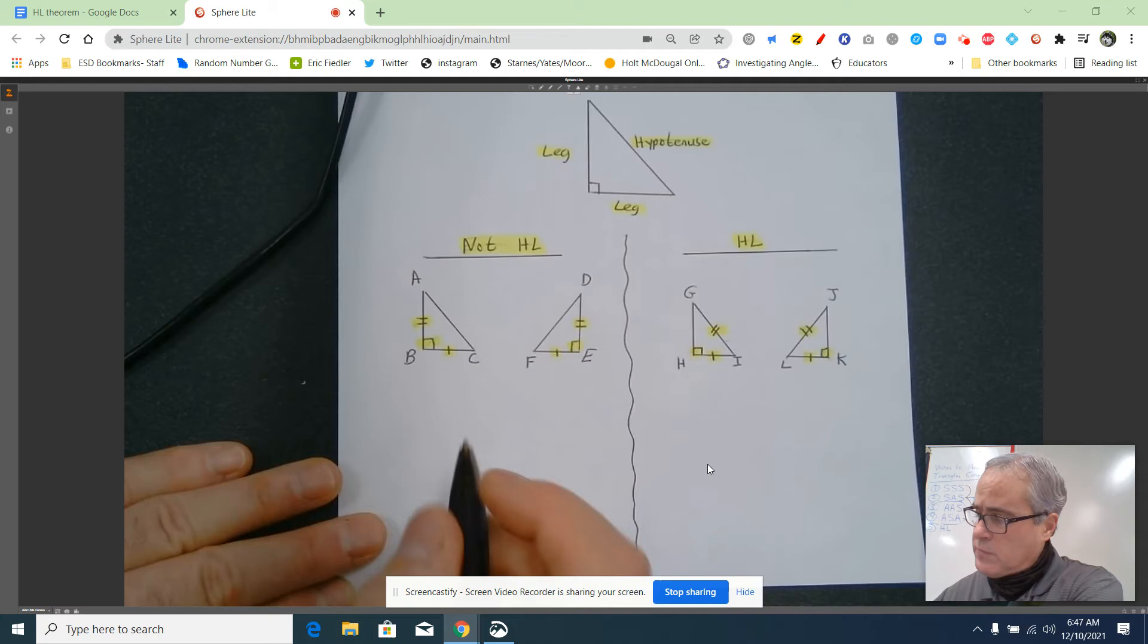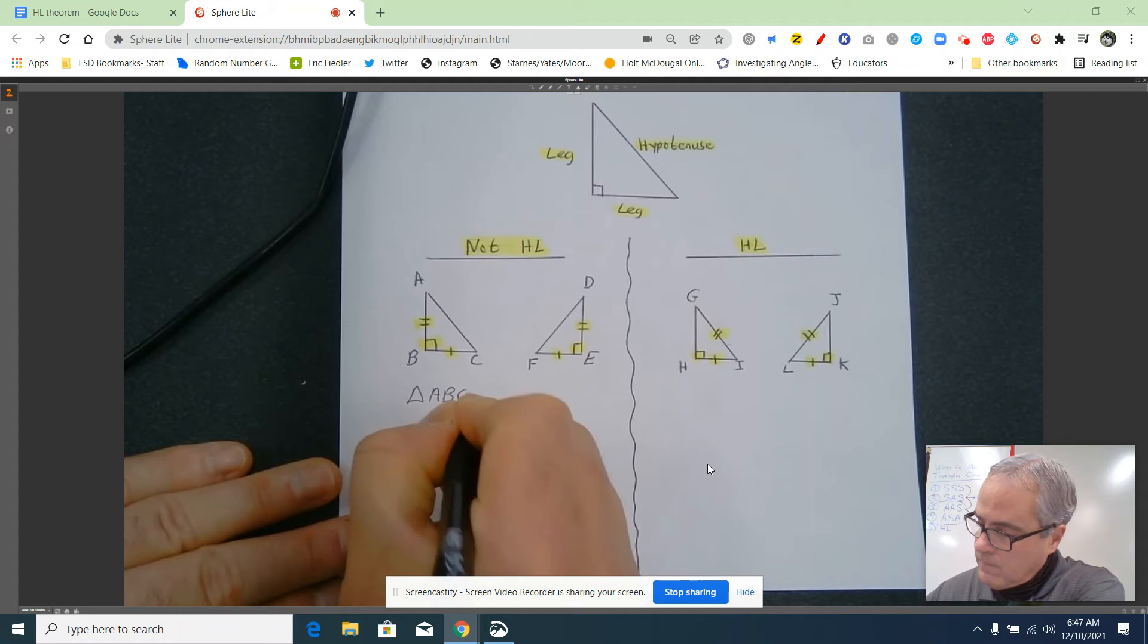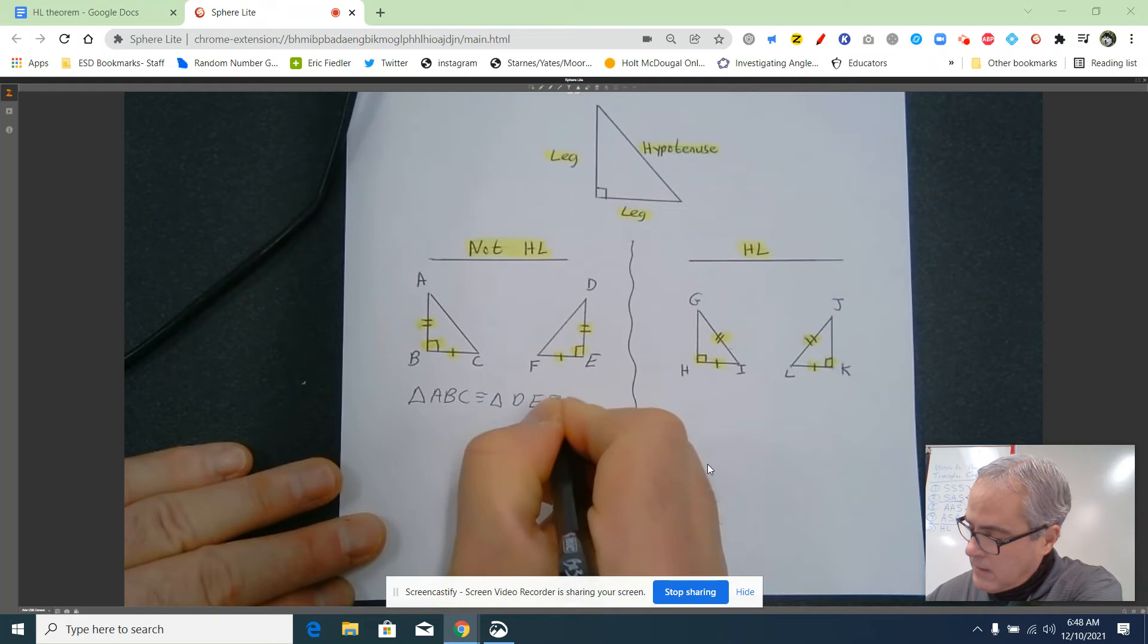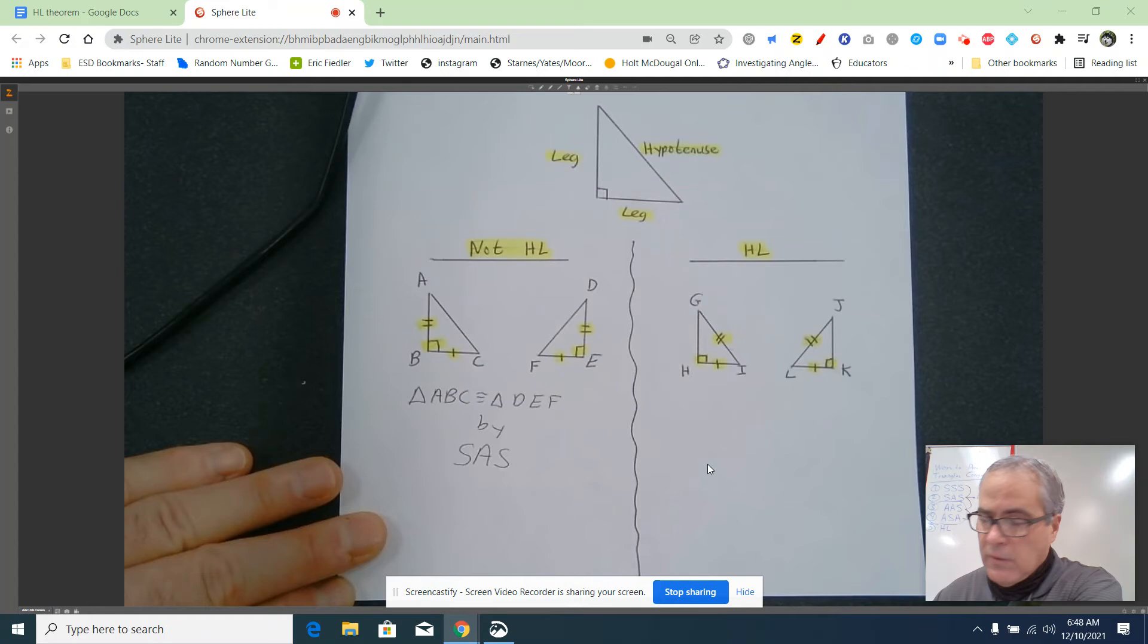So we could say triangle ABC is congruent to triangle—you guys know me, I got to take my time and make sure I get the congruency statement right—A would correspond to DEF. And this is by side-angle-side, because that angle is included.